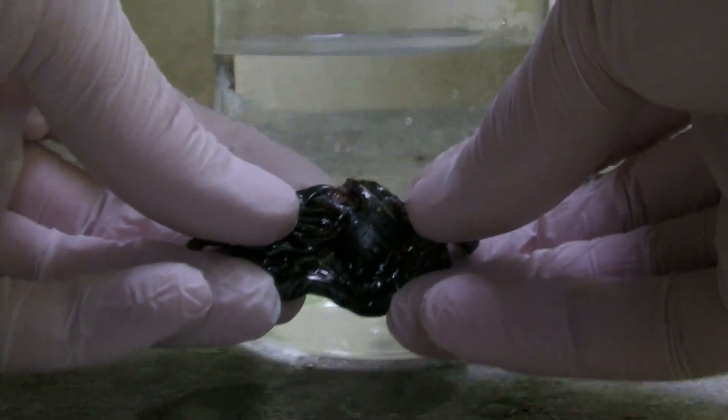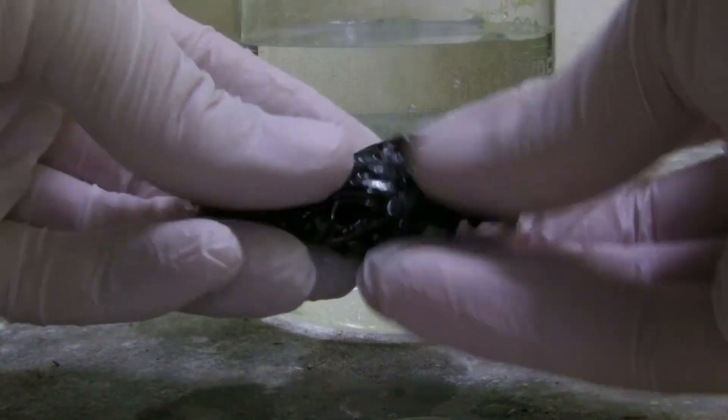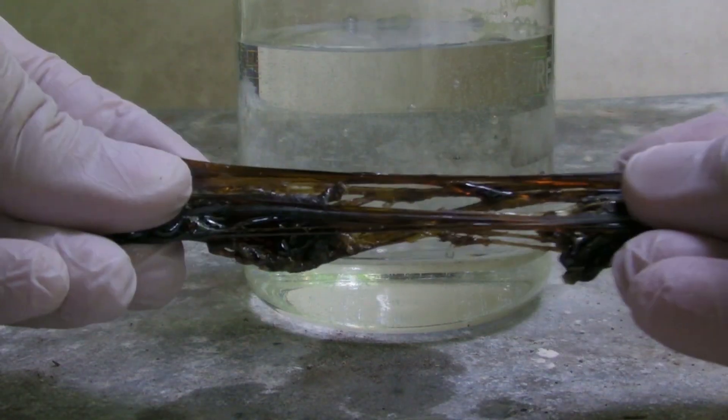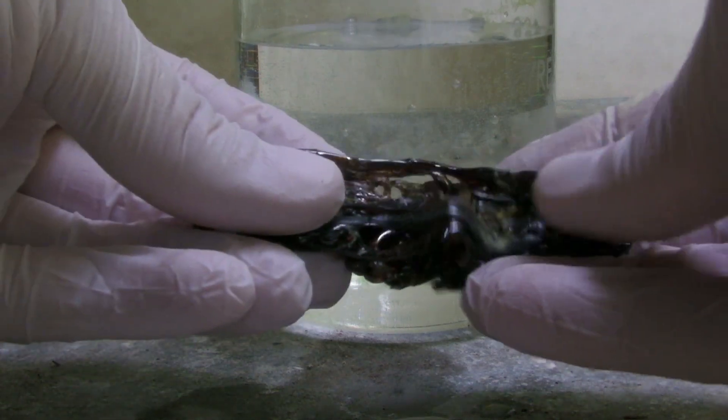Plastic Sulfur has a rubber-like consistency and can be torn easily.